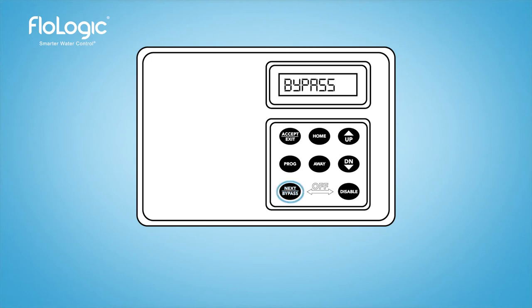The bypass mode suspends all flow monitoring and is used for times when you need to have extended continuous water use, such as to manually fill a pool. The bypass mode default time is 2 hours and can be programmed up to 23 hours. When you enter the bypass mode, the previous mode of home or away automatically reactivates once the bypass mode time expires.